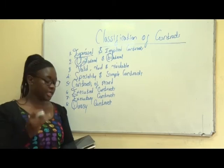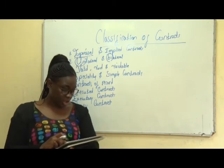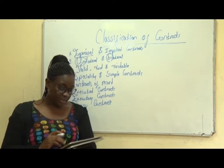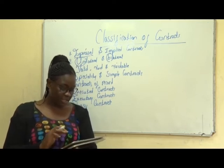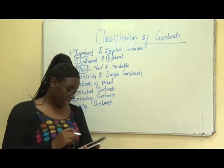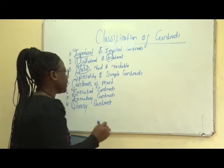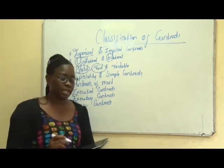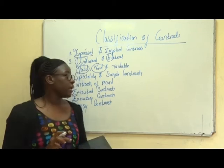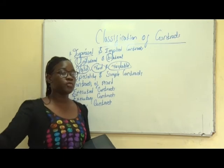Then we have valid, void and voidable — a very common question. A valid contract is an agreement that is enforceable by law. An agreement becomes enforceable by law when all the essentials of a valid contract are present. A void contract is one in which the agreement is not binding — it's void, meaning it's not binding. A voidable contract is one that is enforceable by law at the option of one party — it's similar to valid, but only enforceable at the option of one party.